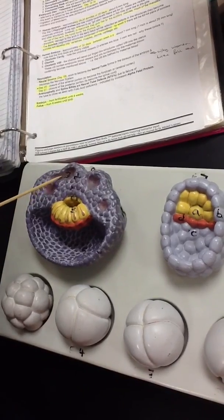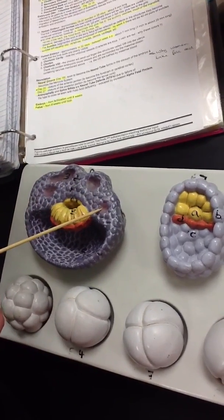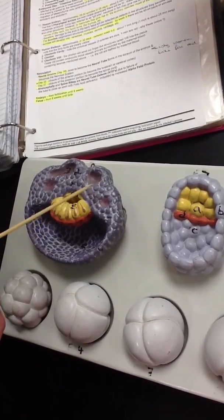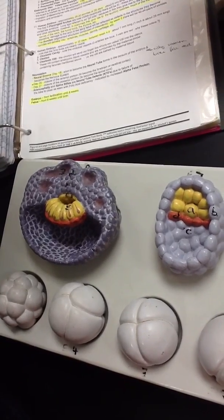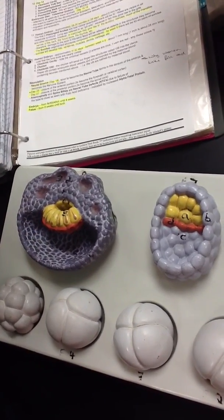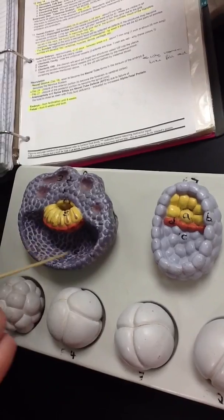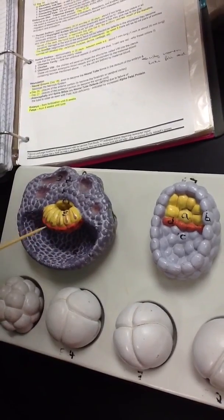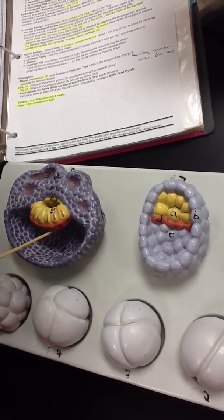Then we have lacunae, which are these spaces that are eventually filled with maternal blood, which bathes the chorionic villi. Then we have the blastocoel, which is again this space. Once lined by cells from the hypoblast, it becomes the primary yolk sac.